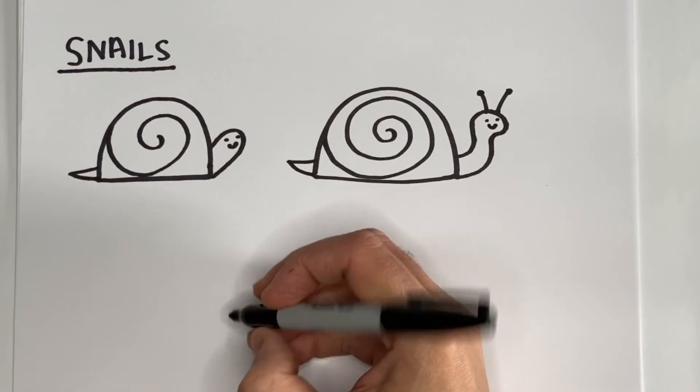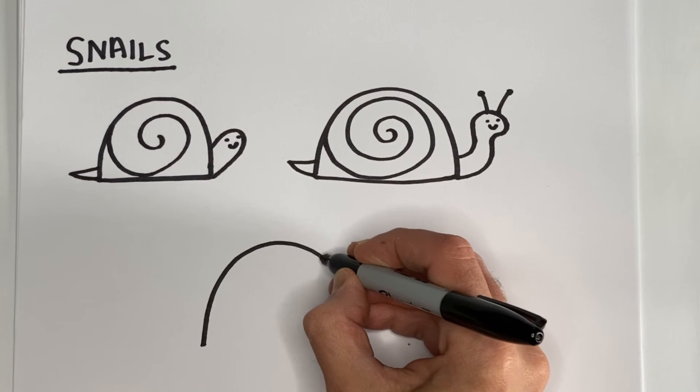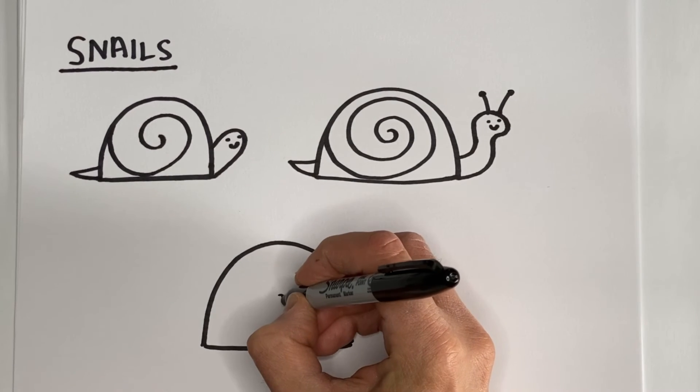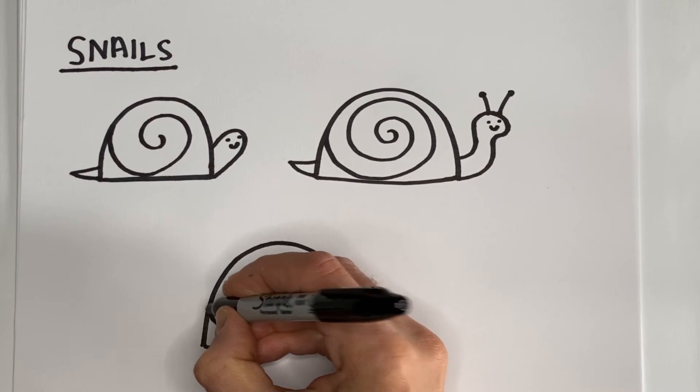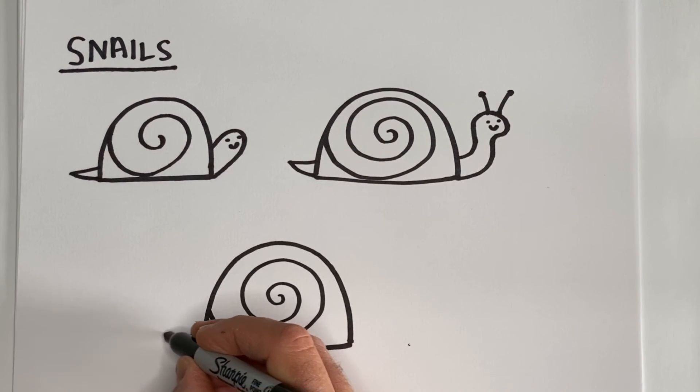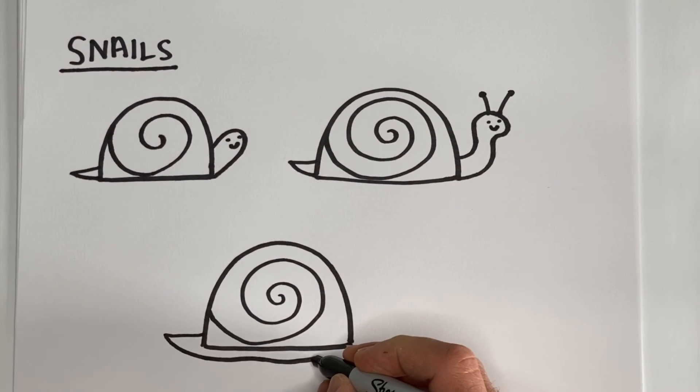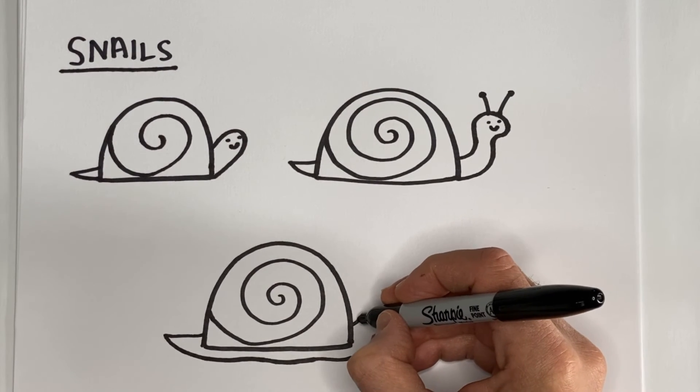And last of all, I'll show you one other variation, where you make the shell. Then you're going to make the tail, but you're going to go beneath the shell and sort of just follow along. It can be a little wavy, because snails sometimes have that wavy shape.